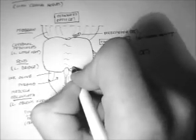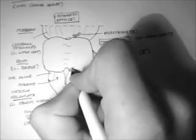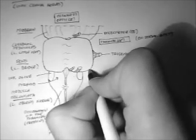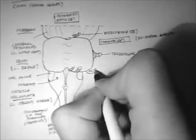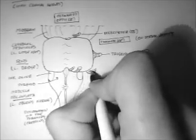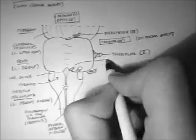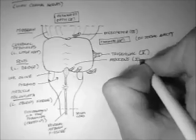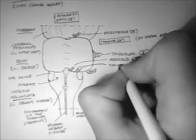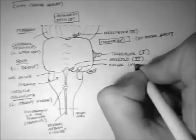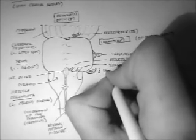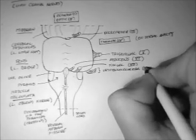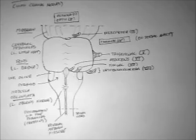Just down here in the very lower pons there are three more nerves that come out, and one of them is a double nerve. The first is the abducens nerve — that's a smaller nerve because it only innervates one muscle of the eye. The next one is the facial nerve, which is a much fatter nerve because it has lots of different parts. And these two double nerves here make up the vestibulocochlear nerve: the superior parts are the cochlear division and the inferior parts are the vestibular division.